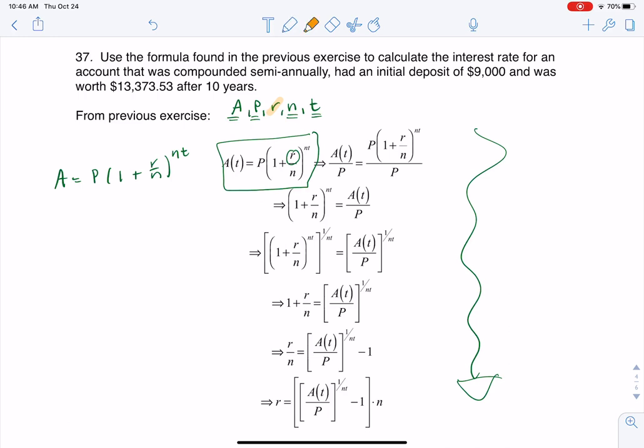So in terms of A, A was $13,373.53. P was $9,000. That was our principal. N gets told here. The fact that it was semi-annually compounded interest, that means N was two because we were given interest two times a year. And we were also told that that money was in that account for 10 years.